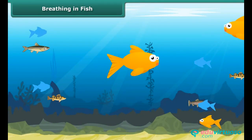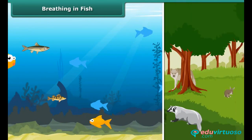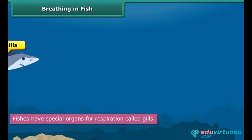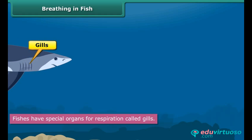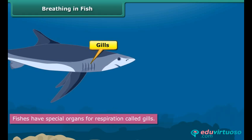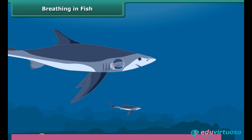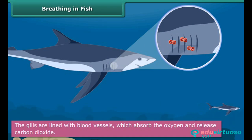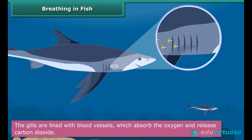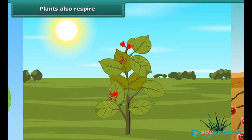Since fish is an aquatic animal, its respiratory system is different from that of animals living on land. Fish have gills that allow them to breathe in water, so they are under no compulsion to come to the surface for air. They take in oxygen-rich water through their mouth and pass it over the gills. The gills are lined with blood vessels which absorb oxygen and release carbon dioxide into the water, and the deoxygenated water is then expelled through the gills.